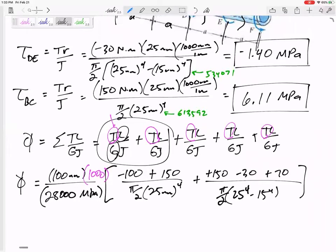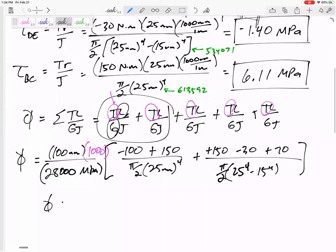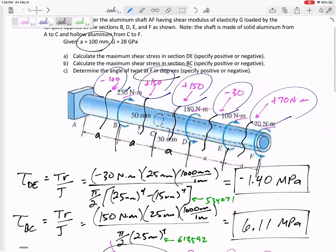So I think it's helpful to factor out as much as you can so that you're not multiplying, you're not having to punch in 28,000 into your calculator five different times, right? All right, and I've got an angle of twist of 0.0156 radians. I'd like you to leave that in radians unless I explicitly asked, which I explicitly asked in this problem, in degrees.